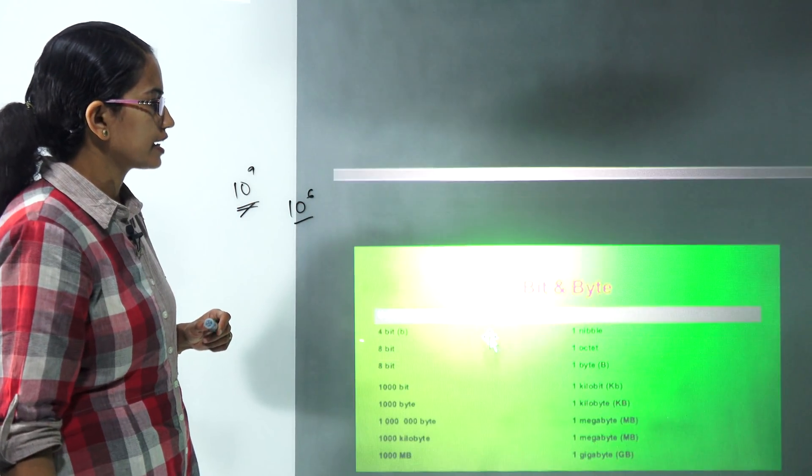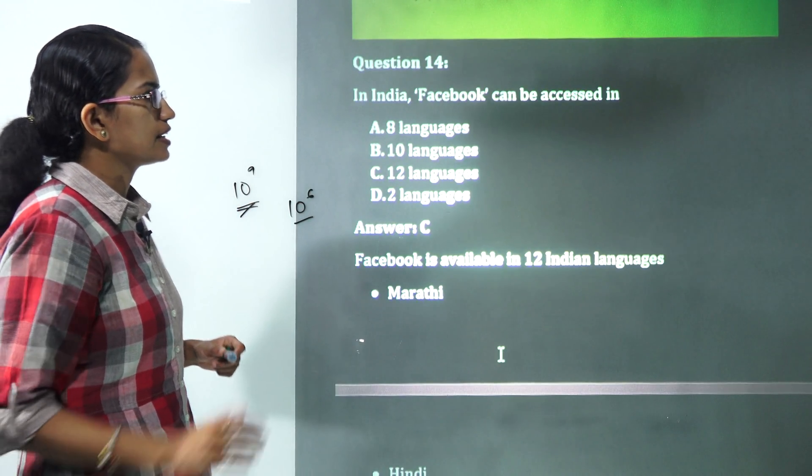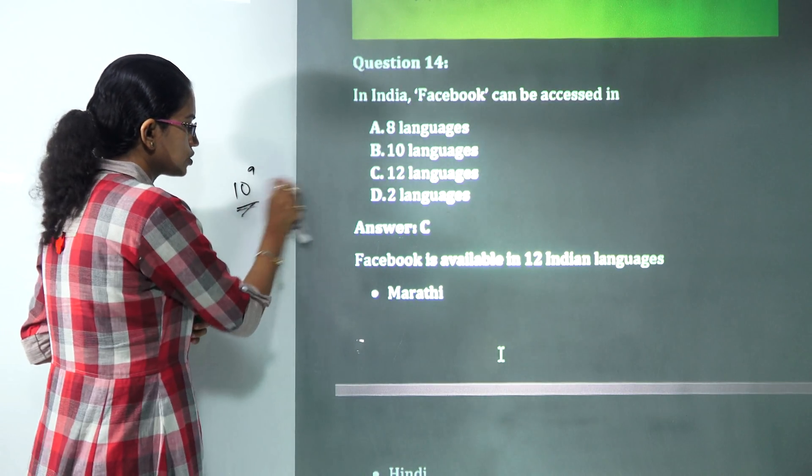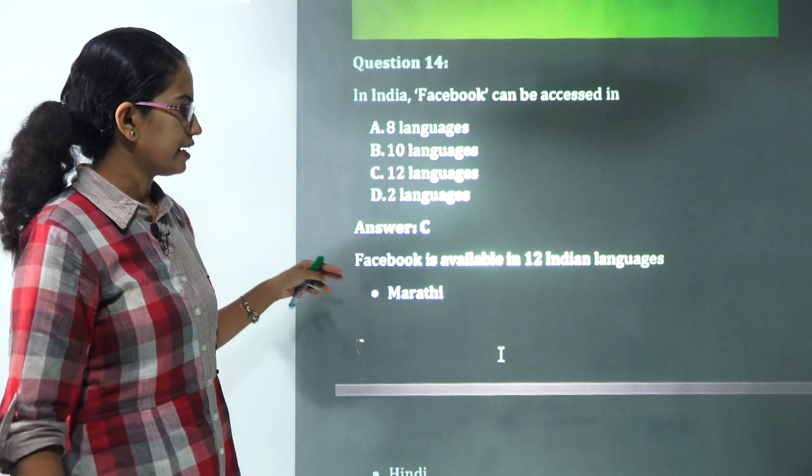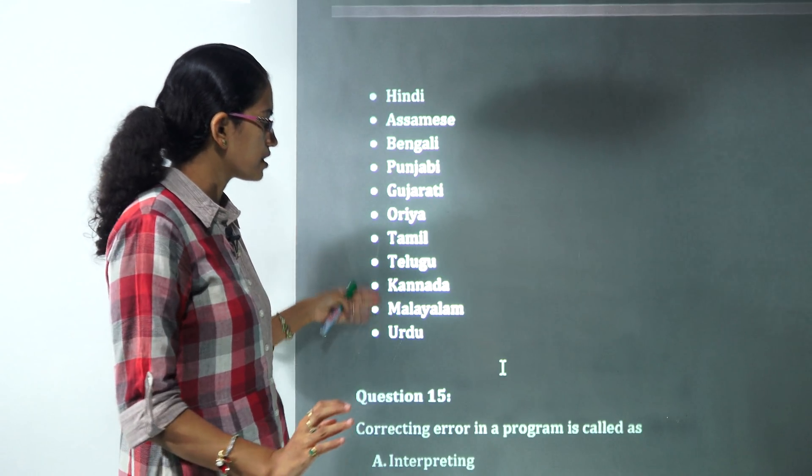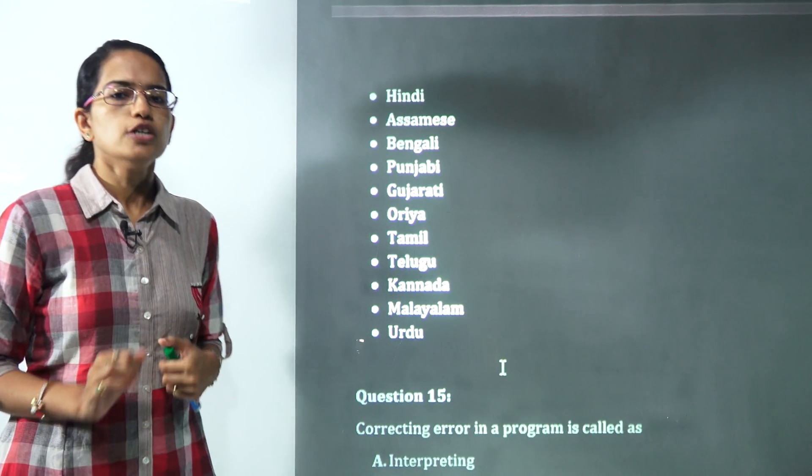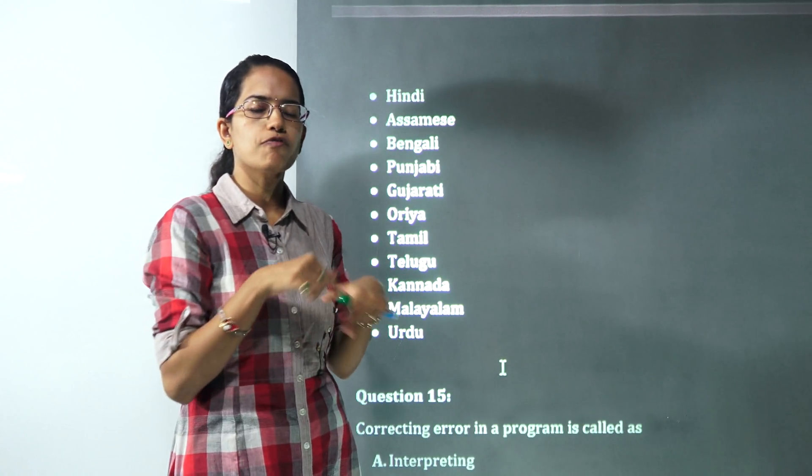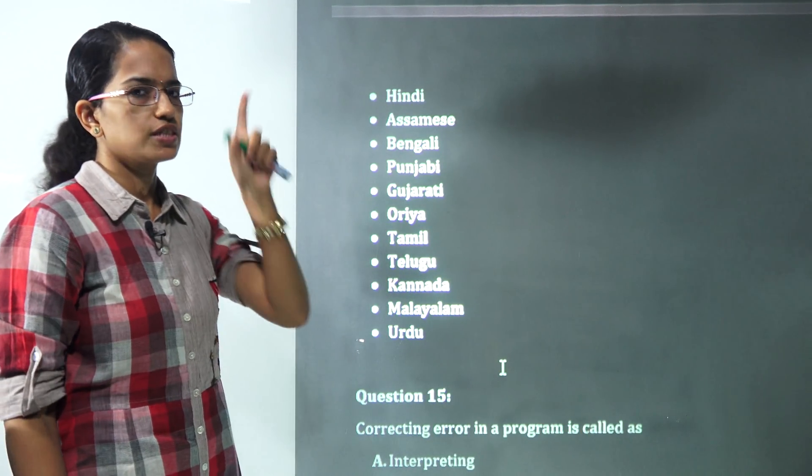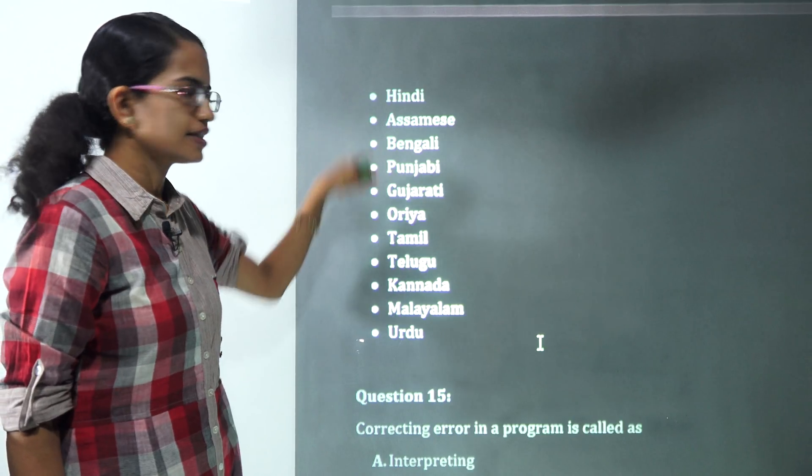In India, Facebook can be accessed in. Facebook in India can be accessed in 12 languages. The list of languages we have provided here. You have Marathi, Hindi, Assamese, Bengali, Punjabi, Gujarati, Oriya, Tamil, Telugu, Kannada, Malayalam and Urdu. Even if you go on to the homepage of Facebook, you would see the options for the various languages.